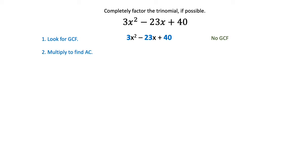So we're going to go ahead with AC method, which means multiply A and C together. Now AC comes from the standard form of the trinomial, Ax² + Bx + C. A is the coefficient of x squared and C is the constant. So in this case we're going to multiply 3 by 40 and get 120.